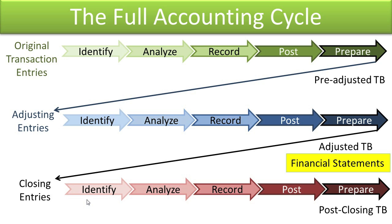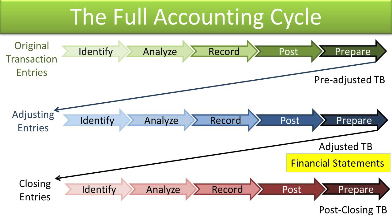Those accounts are called Temporary Accounts. We need to identify those temporary accounts — Revenues, Expenses, and Dividends — analyze how to close them, record the closing entries which will close them down to zero, and transfer their balances into a permanent account called Retained Earnings. We'll post those entries into their respective ledger accounts so all temporary accounts are zero and the Retained Earnings account has been updated, then we will prepare a post-closing trial balance.